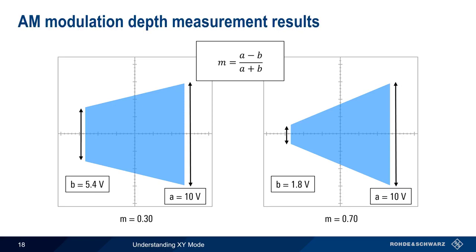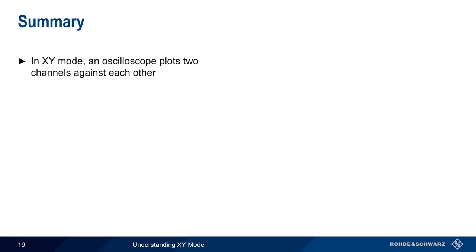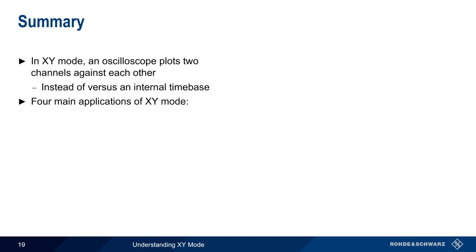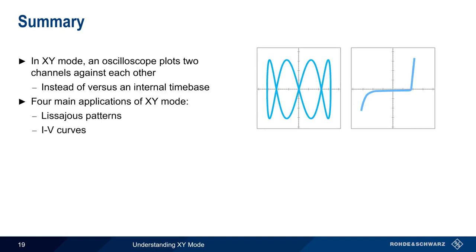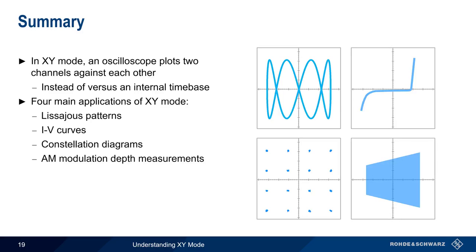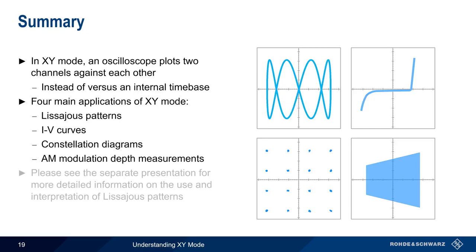Time for a brief summary. XY mode on an oscilloscope is used to plot two channels against each other, rather than plotting them against an internal time base — that is, individually as a function of time. There are four main applications of XY mode: Lissajous patterns, IV curves, constellation diagrams, and AM modulation depth measurements. In this presentation we only had time for a short introduction to Lissajous patterns, so please see the separate presentation on how to interpret and use Lissajous patterns. This concludes our presentation, Understanding Oscilloscopes XY Mode. If you are interested in learning more about oscilloscopes or oscilloscope-related measurements and applications, please see the links in the video description.